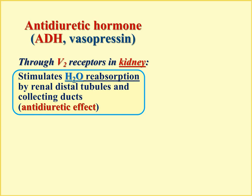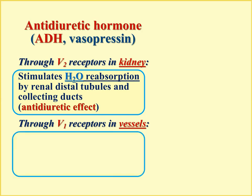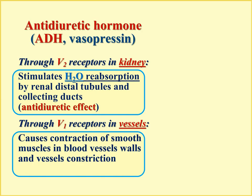In the absence of ADH, there are no water channels and the cells are not permeable for water, so less water is reabsorbed and more is lost with urine — an anti-antidiuretic effect. V1 receptors in vessels use the phospholipase C pathway causing contraction of smooth muscles in the vascular wall, producing vasoconstriction and increased blood pressure. The vasopressor effect is achieved when hormone level increases, which happens for example in case of a great decrease in blood pressure or blood loss.